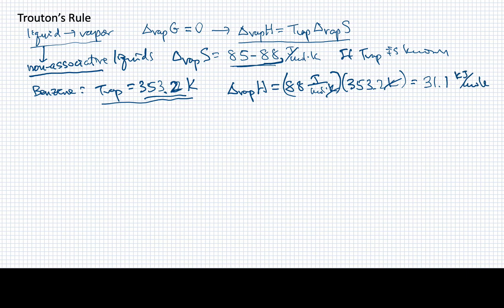Okay, well, how accurate is that? Well, the value that is accepted to be the value for benzene is 33.9 kilojoules per mole. So you can see that Trouton's rule doesn't give you exact answers, but it's within 10% of the right answer.